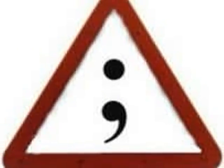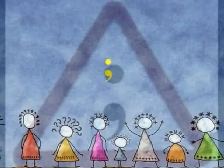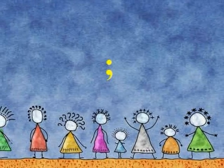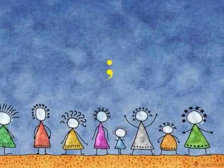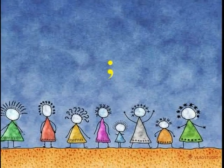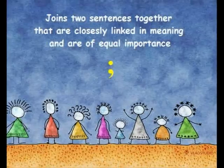Now let's talk about the semicolon. The semicolon is a punctuation mark that looks like a tadpole bouncing a ball on its head. The first thing it does is join two sentences together that are closely linked in meaning and are of equal importance.